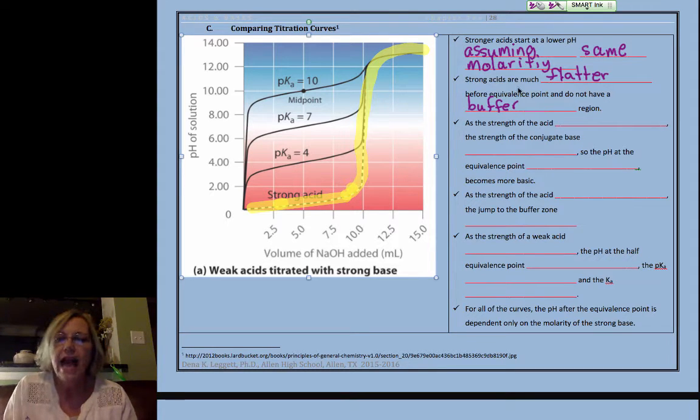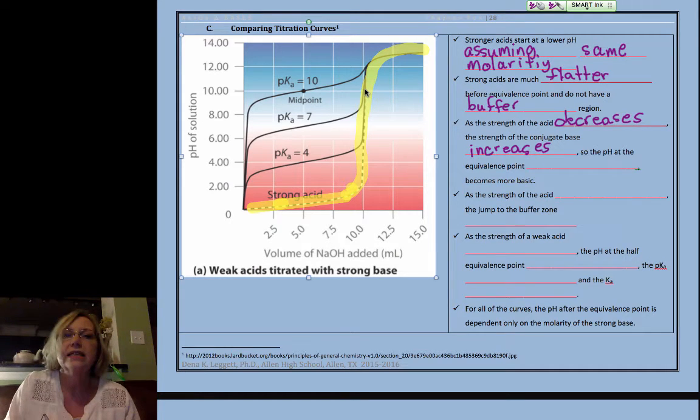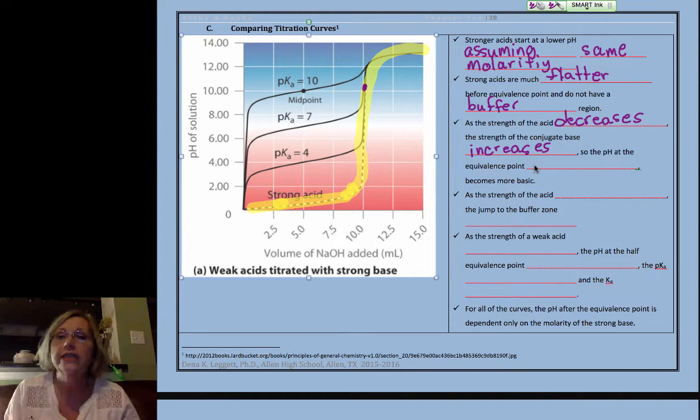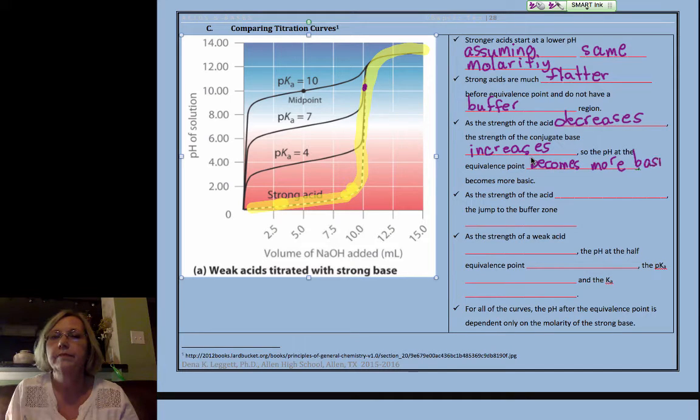As the strength of the acid decreases, the strength of its conjugate base increases. Now, remember, for weak acids and bases, the pH at the equivalence point is the result of an equilibrium with the conjugate base. So, as the conjugate base strength increases, the pH at the equivalence point becomes more basic.